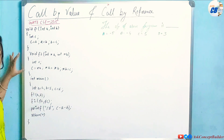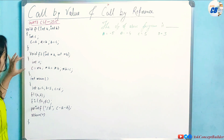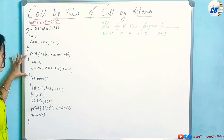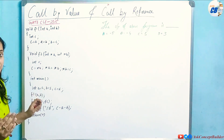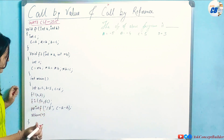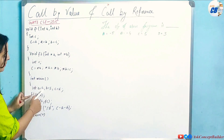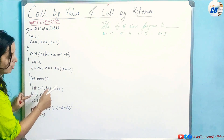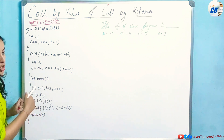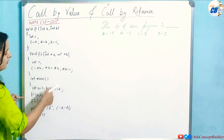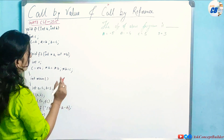In this program, one main function is given along with two more functions, f1 and f2. In f1, you are calling with 'f1(a, b)' — passing values a and b, so that is call by value. In f2, you are passing addresses, so that is call by reference. In the receiving end of f2, pointer variables are there to receive the addresses.